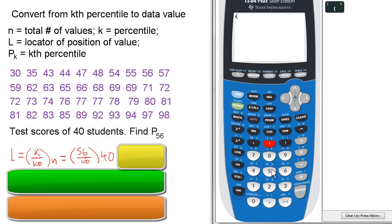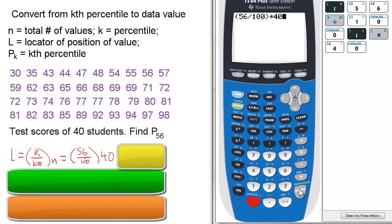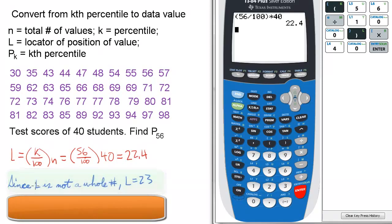That's going to be 56 divided by 100 times 40, and that's 22.4. Since l is not a whole number, we go one higher. So if it's not like a number like 20, 21, or 22, we round up. So now l is 23.